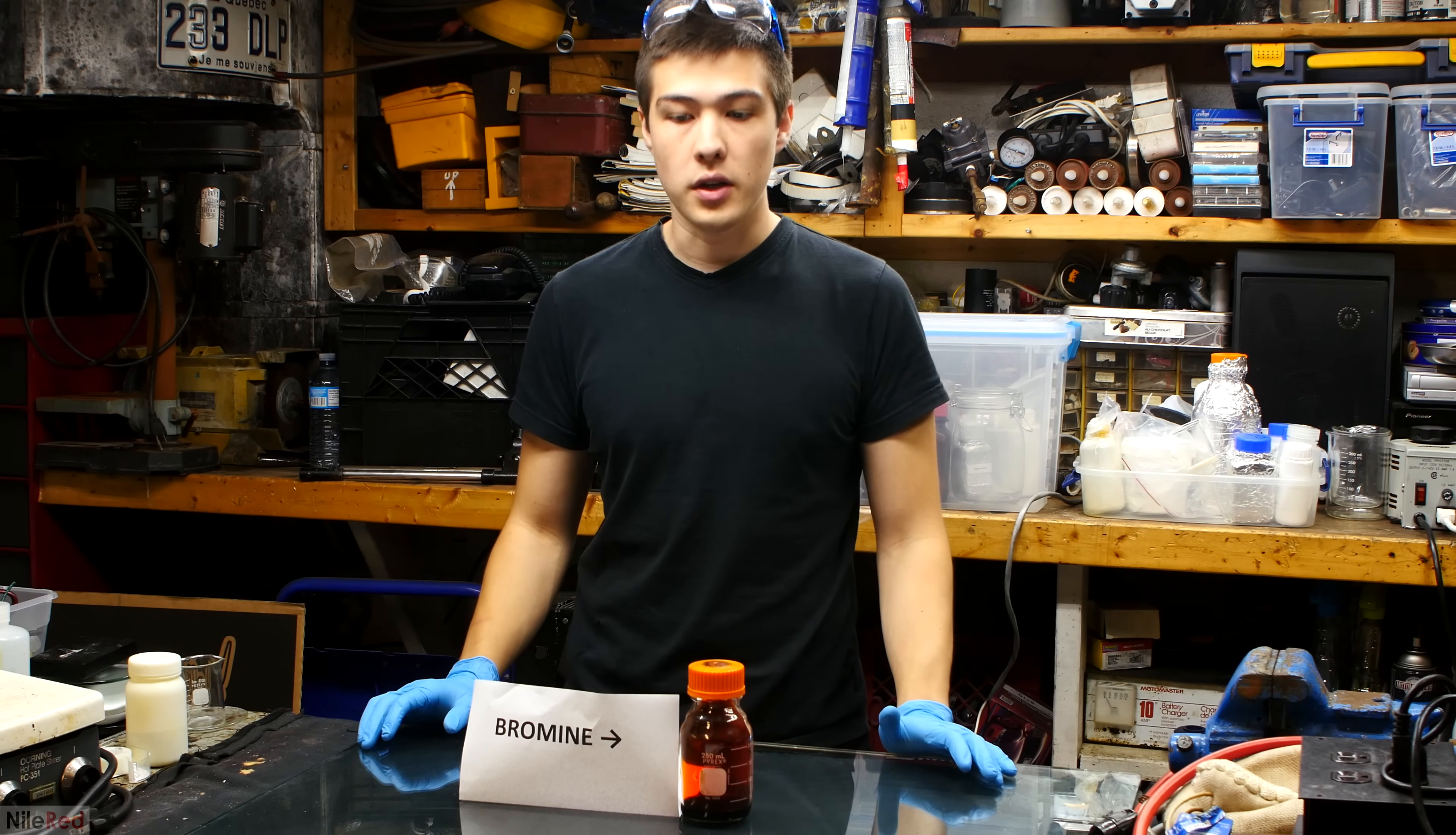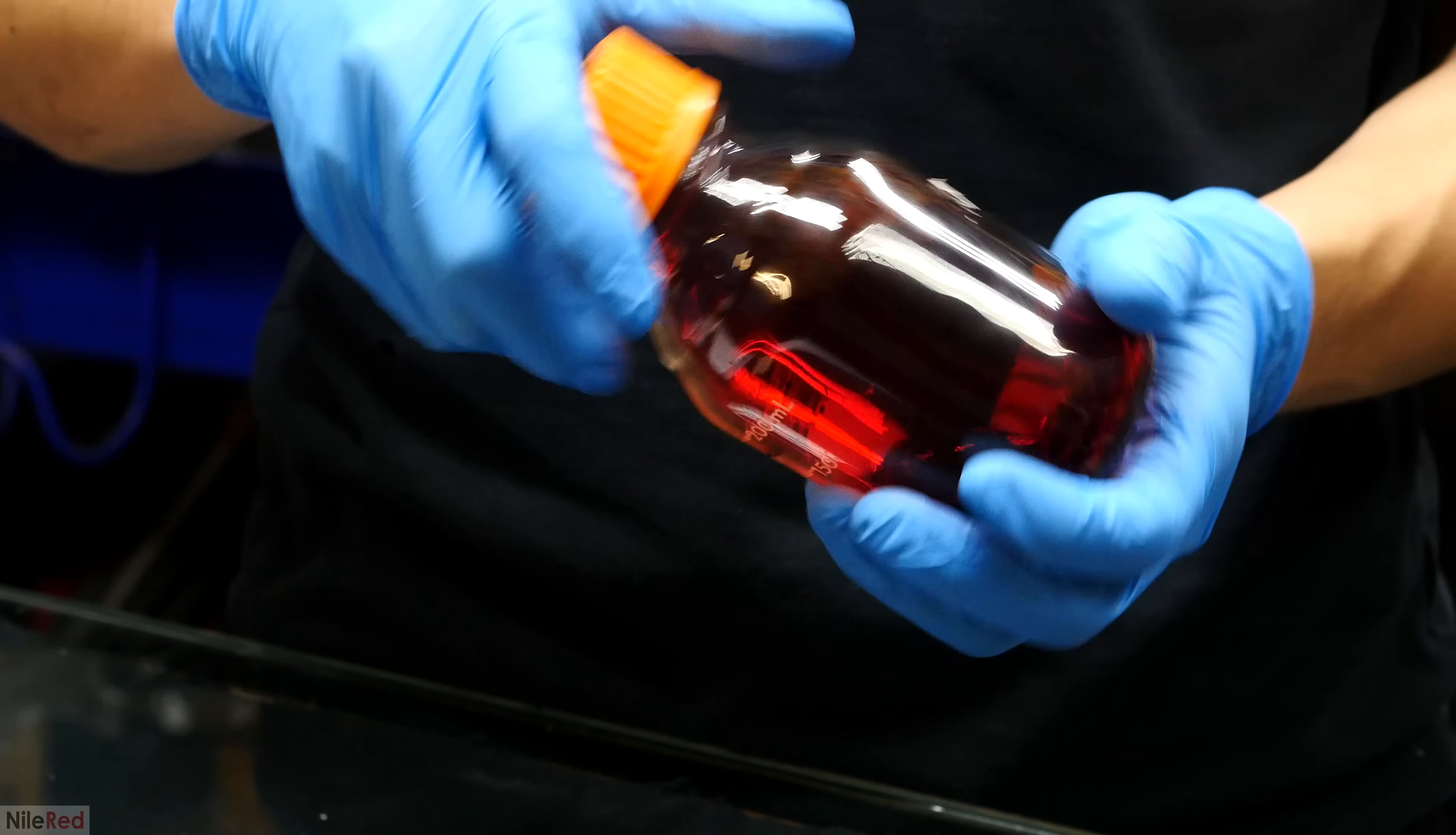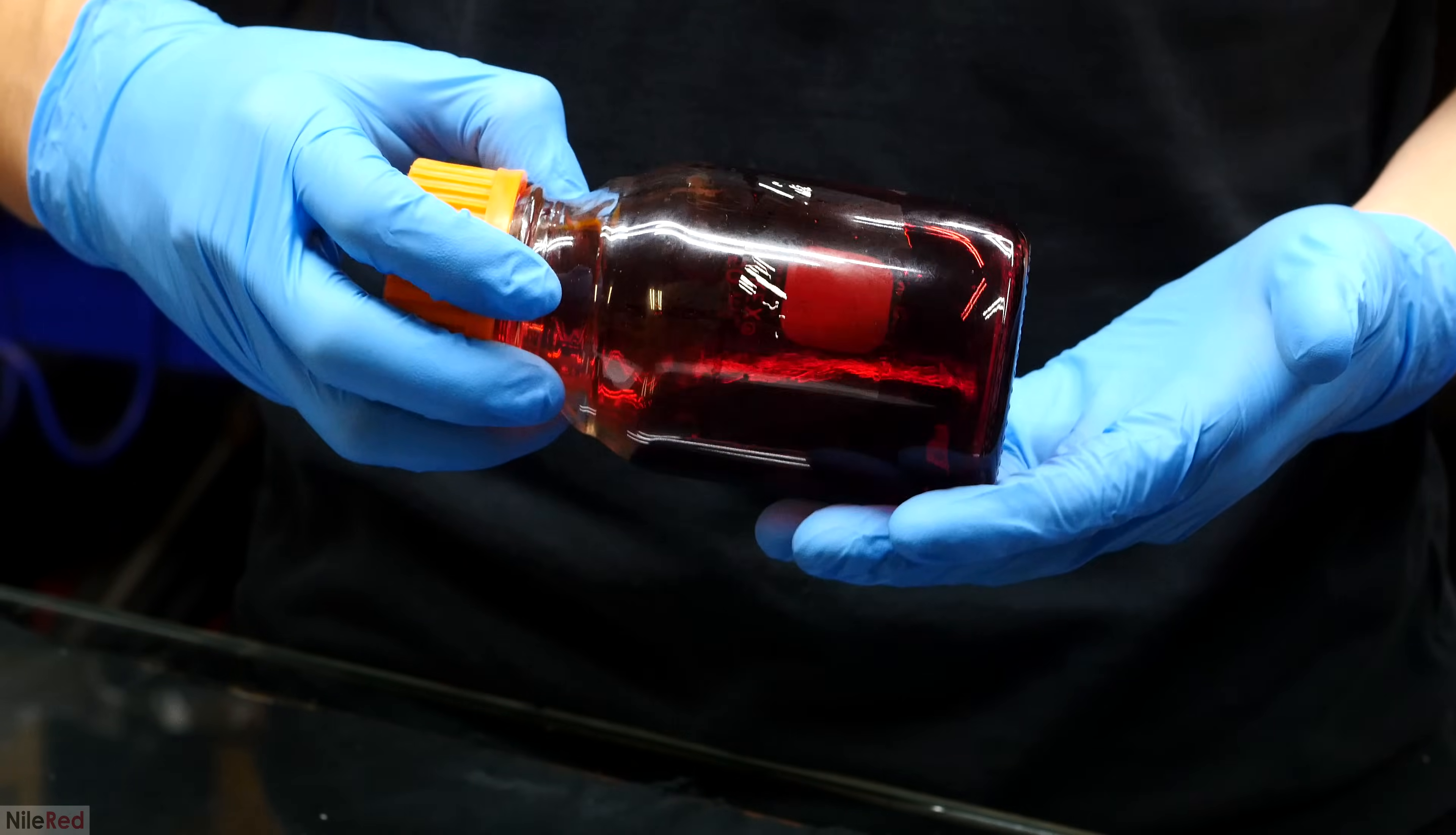So now that we're done with the intro we can just get rid of this paper and we can take a closer look at the bromine. It has a very dark red nearly black color and honestly looks a little bit scary.